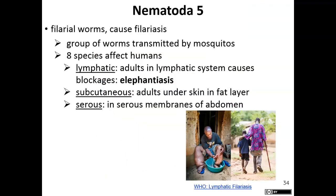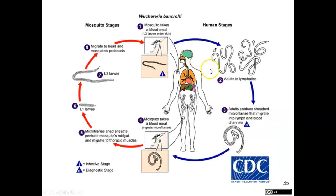And then we have our filarial worms. Filarial worms cause filariasis — these are a group of worms transmitted by mosquitoes, and different systems can be affected. We have the lymphatic system, which causes elephantiasis, which is what you're seeing here. They can attach to the subcutaneous layers, with adults living under the skin in fat layers. They can also attack the serous membranes of the abdominal region. For example, Wuchereria bancrofti causes lymphatic filariasis or elephantiasis.